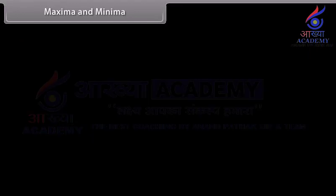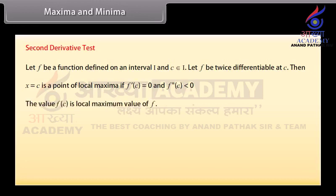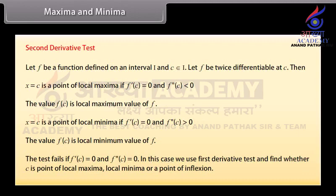Second derivative test. Let f be a function defined on an interval i, c belongs to i, and f be twice differentiable at c. Then x equals c is a point of local maxima if f dash of c equals 0 and f double dash of c is less than 0; the value f of c is the local maximum value. x equals c is a point of local minima if f dash of c equals 0 and f double dash of c is greater than 0; the value f of c is the local minimum value. The test fails if f dash of c equals 0 and f double dash of c equals 0 — in this case use the first derivative test to determine whether c is a local maxima, local minima, or a point of inflection.